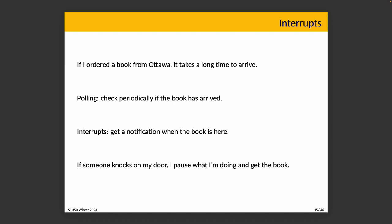Interrupts: if I order a book from Library and Archives Canada, it potentially takes a long time. One option is polling — I just check periodically if the book has arrived. There's a certain amount of wasted effort: every time I check, I put down what I'm doing, look in my mailbox, don't see it, go back and pick up what I was doing. More efficient is an interrupt — I get a notification when the book is here, somebody knocks on my door. Until that happens, I don't have to stop what I'm doing.